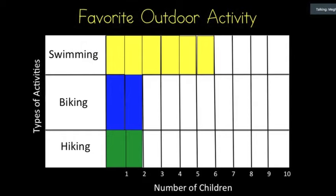I made my own graph using some data that I collected from the kids in my class. I asked them which one was their favorite outdoor activity. They could choose from swimming, biking, or hiking. So, when they voted, we can see that six children chose swimming as their favorite outdoor activity. Two children chose biking and two children chose hiking. So, when I look at my information, I can see that swimming is the favorite outdoor activity of the kids in my class. And biking and hiking both tied for the least favorite with only two votes each.